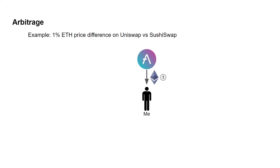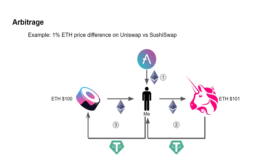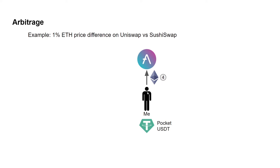Let's say I found a 1% ETH price difference on Uniswap versus SushiSwap, and I don't have much ETH. So I take a flash loan from Aave and borrow 1 ETH. I go to Uniswap where ETH is worth 1% more and sell it, receiving 101 USDT. Then I go to SushiSwap and use 100 USDT to buy back 1 ETH. Now I have 1 ETH and 1 USDT. I repay the 1 ETH to Aave and pocket the 1 USDT. Scaling this up to 1,000 ETH multiplies the profit accordingly.